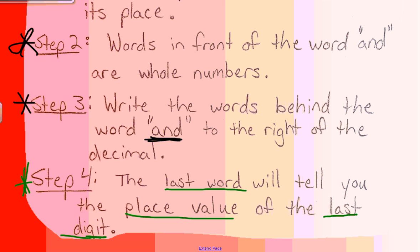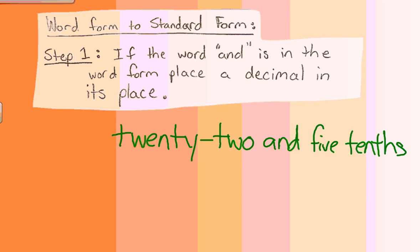Let's try a couple examples. Working through step one, you can see again we're converting from word form to standard form. We look at our sample, and we can see that the word AND appears. We're simply going to replace this with a decimal, and move on to step number two.